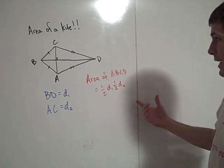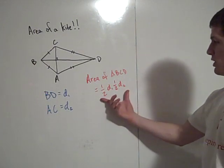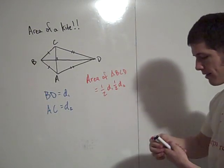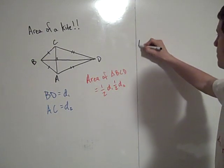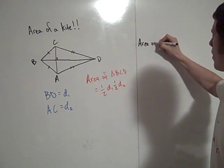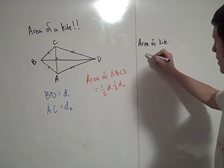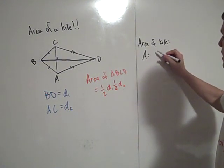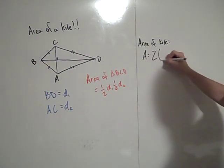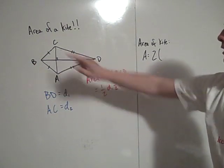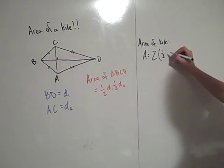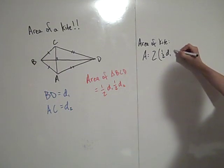Now what's the area of the kite? Well the area of the kite is twice this. So area of the kite is two times the area of this triangle BCD, which is two times one half D1 times one half D2.